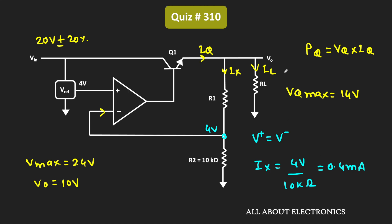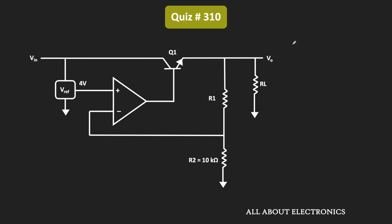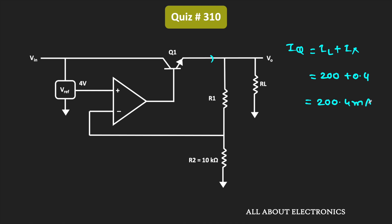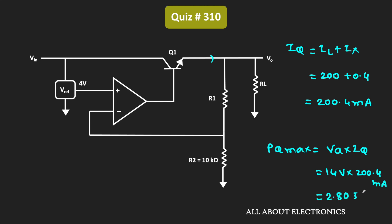The load current IL is equal to 200mA. That means the current IQ is equal to IL plus Ix, that is 200mA plus 0.4mA, which equals 200.4mA. Therefore, the maximum power getting dissipated across this transistor Q1 is equal to 2.8056W.